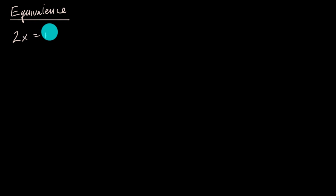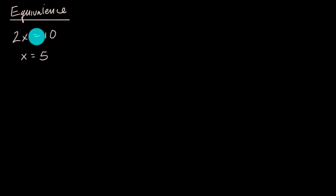In a previous video, we talked about the notion of equivalence with equations. Equivalence is the notion that there are different ways of writing equivalent statements in algebra. For example, 2x equals 10, or x equals 5 — these are equivalent equations because an x satisfies one of them if and only if it satisfies the other. In both cases, x equals 5 is the only solution.